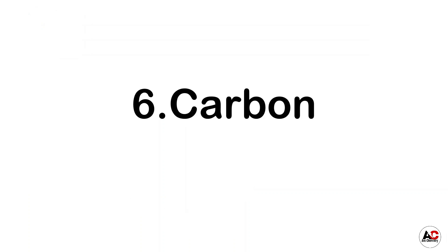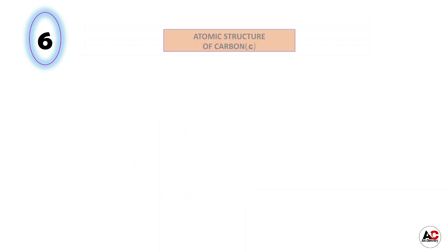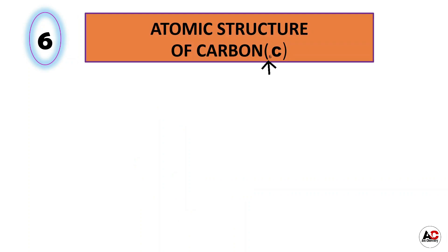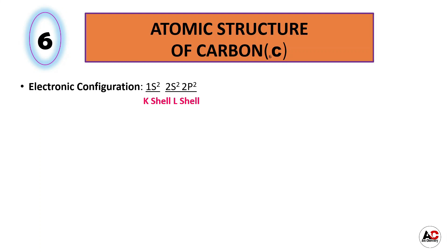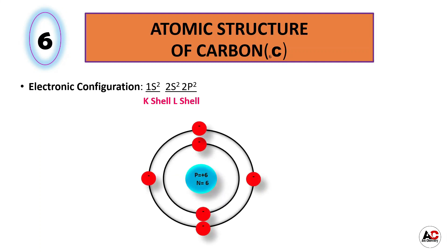Now carbon. Atomic structure of carbon. The atomic number of carbon is 6, meaning it has 6 electrons. The electronic configuration of carbon is 1s2, 2s2, and 2p2, meaning in the K shell it has 2 electrons and in the L shell it has 4 electrons. With the help of this electronic configuration, the atomic structure of carbon will be like this. It has 6 protons and 6 neutrons inside the nucleus and 6 electrons around the nucleus: 2 are in the K shell and 4 are in the L shell.